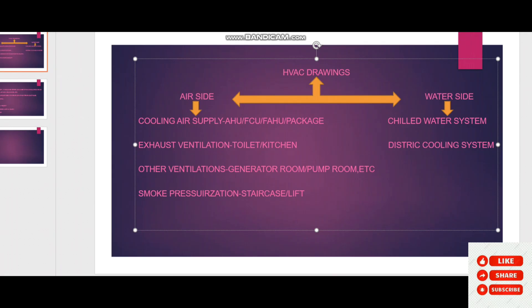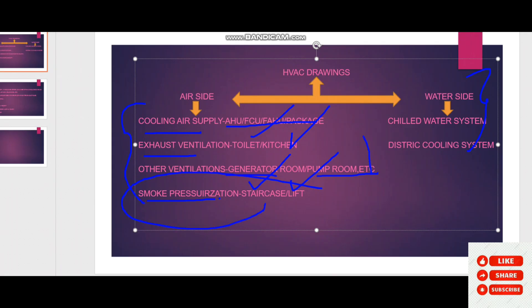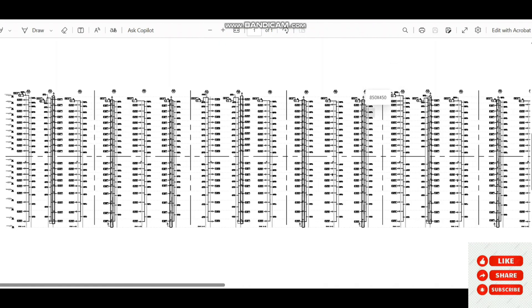For HVAC drawings, we mainly have two parts: the air side and the water side. Coming to the air side, we have four important sections. The first is the cooling air supply, done through AHU (air handling unit), fan coil unit, fresh air handling unit, and package unit. For exhaust ventilation, we have toilet ventilation, general exhaust, and additional ventilation for generator rooms, pump rooms, etc. We also have smoke pressurization — staircase pressurization and lift pressurization — which we will start with first.